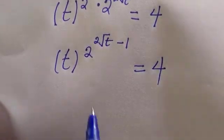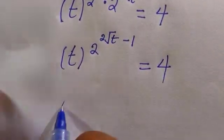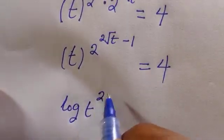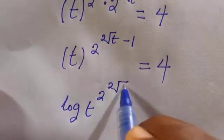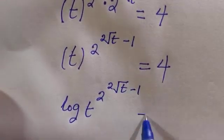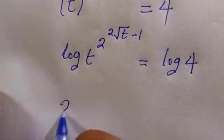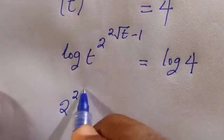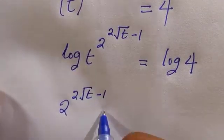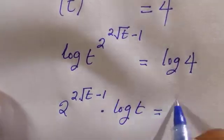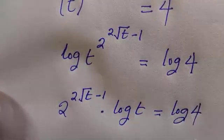Then what we do next is if I try to introduce logarithm to bring the power of t down, we have log of 2 to the power of 2 root t minus 1 equals log 4. Therefore by taking all of this down, 2 to the power of 2 root t minus 1 times log t equals log 4.